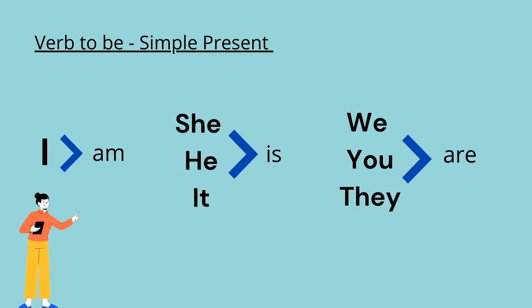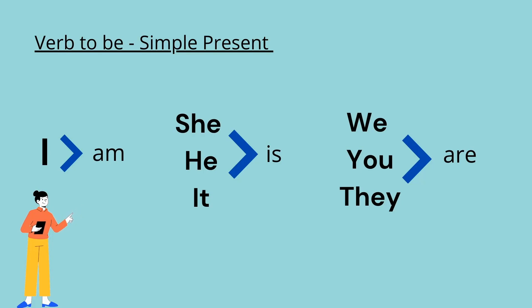Before we start, let's review the verb to be. In the present tense, we divide the verb to be into am, is, or are according to the subject of the sentence.